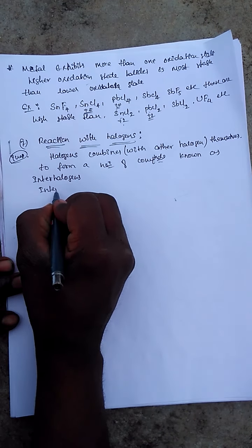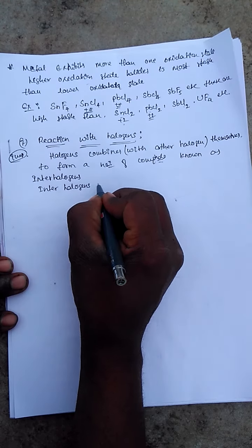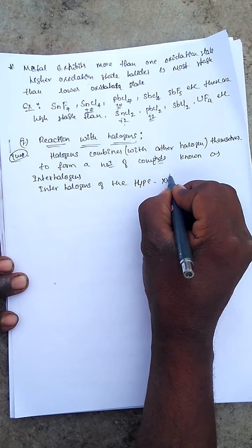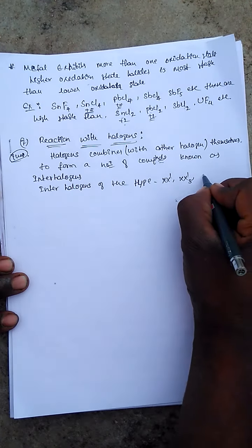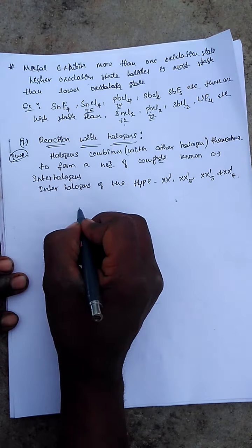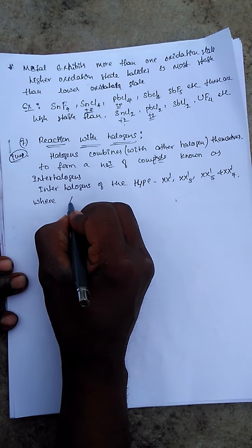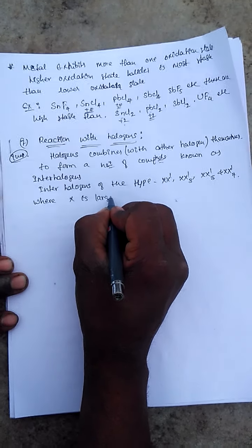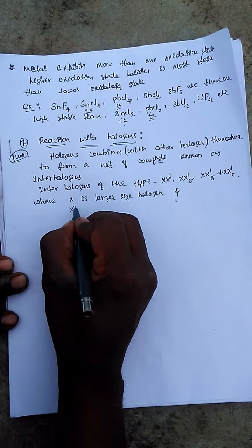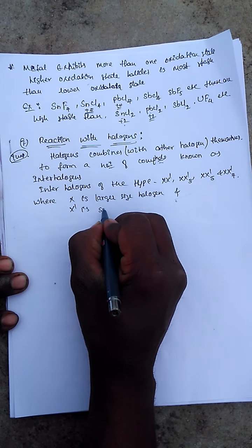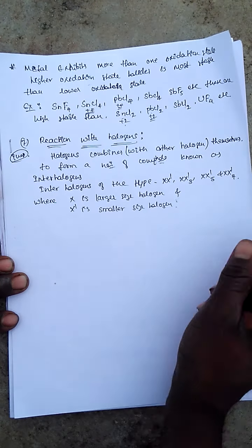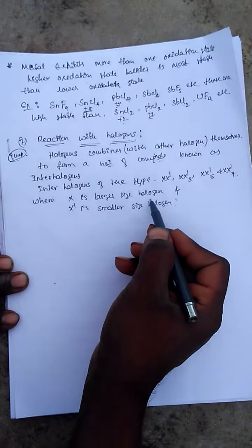Interhalogen compounds are of the types XX', XX'3, XX'5, and XX'7, where X is the larger-sized halogen and X' is the smaller-sized halogen.